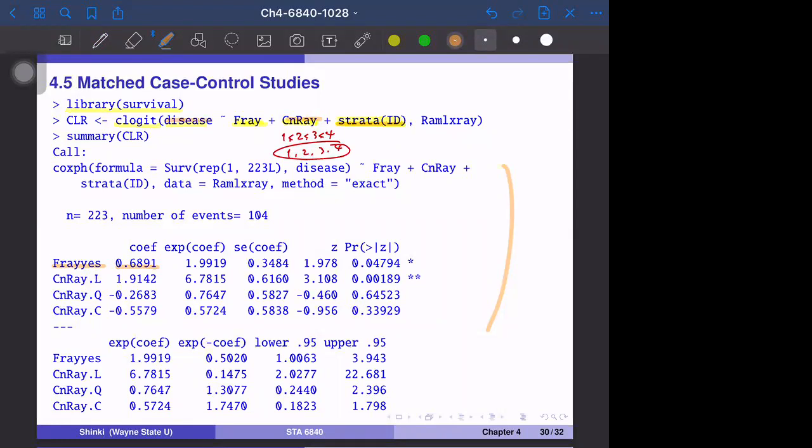If CN-ray is a factor variable, R just adds the factor variable for each level. But if this is an ordered variable, R makes this as linear term, quadratic term, and cubic term. R did some transformation so that these variables are not too similar. For example, Y equals X squared and Y equals X to the fourth power are very similar functions for typical range of X. To avoid that, R did some transformation, but basically L is the linear term, and this is quadratic and cubic term.